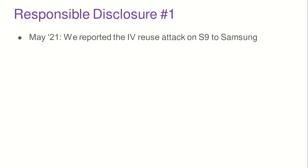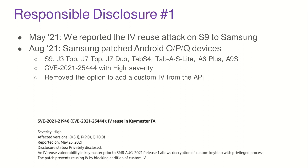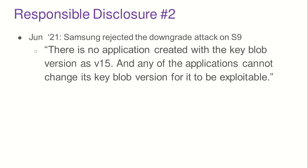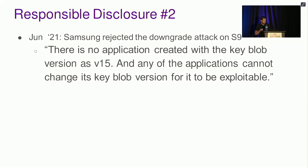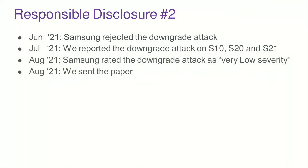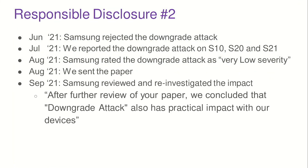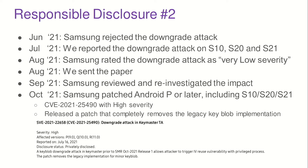The responsible disclosure process with Samsung was interesting. We first reported the IV reuse attack on Galaxy S9; Samsung was cooperative and patched all affected devices three months later. We mentioned the possibility of a downgrade attack on S9, but they said it didn't matter because nobody uses the old version. We then reported the downgrade attack on S10, S20, and S21; Samsung again said there was no practical security impact. After we sent them the full paper including the FIDO2 demo, they changed their stance, released a high severity CVE, and overall over 100 million devices were affected.